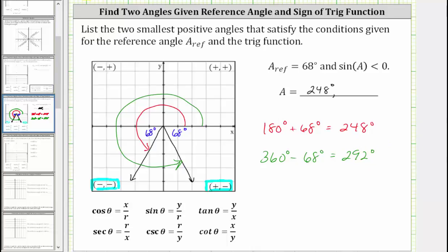292 degrees is the second smallest positive angle that satisfies the given conditions. I hope you found this helpful.